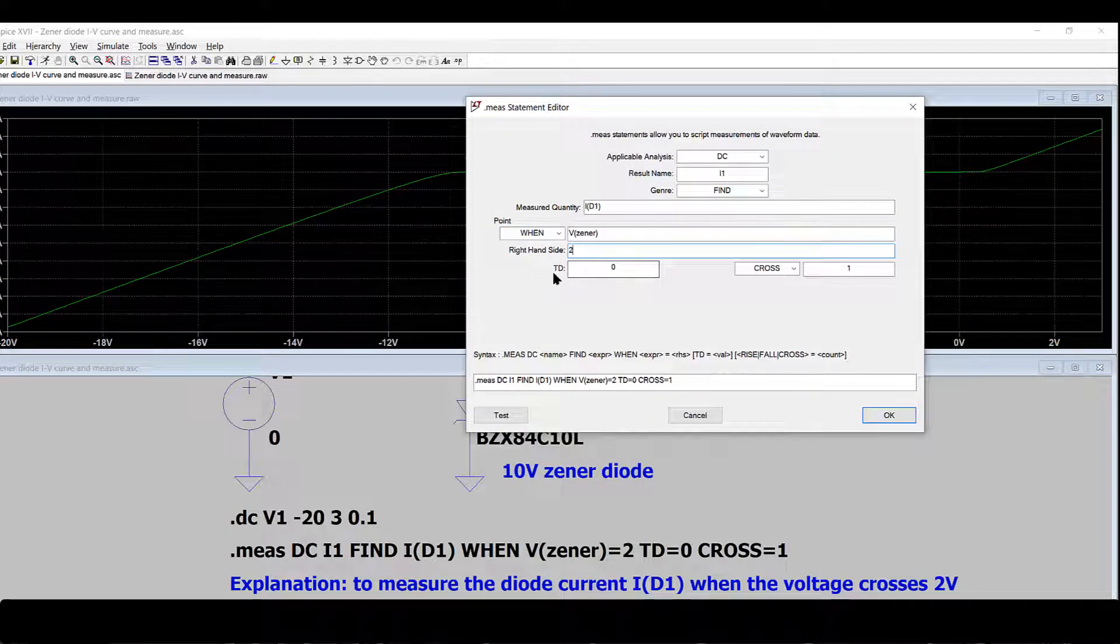At that condition, TD is delay. Delay is 0. And CROSS means the first time crossing the 2V, we want to measure the current of I(D1).